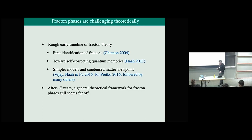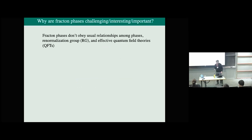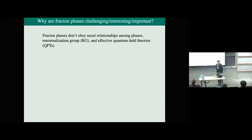That was now about seven years ago, and a general theoretical framework for fracton phases still seems very far away. Why is it taking so long? The one-sentence explanation is that fracton phases don't obey the usual relationships among phases of matter, renormalization group, and effective quantum field theories — those are kind of part of the bedrock of the way we think about condensed matter theory.